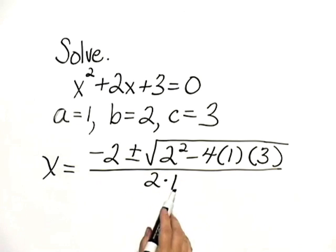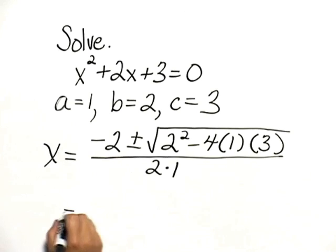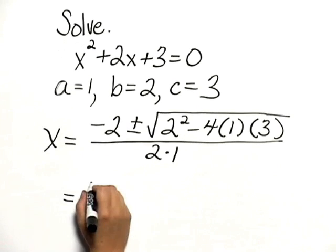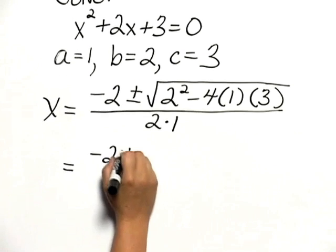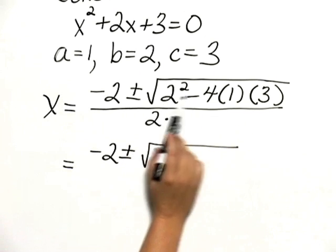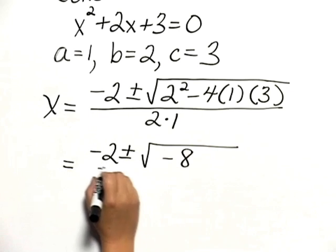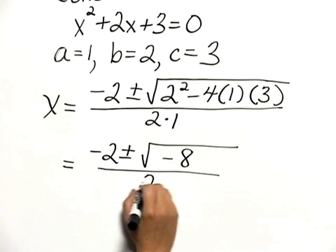You can say it out loud like this, or write it out and then substitute into the formula. We can simplify. This is negative 2 plus or minus the square root of 2 squared is 4. 4 minus 12 is negative 8, all over 2 times 1, which is 2.